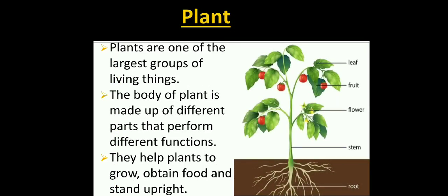Plant. Plants are one of the largest group of living things. The body of a plant is made up of different parts that perform different functions. They help plants to grow, obtain food and stand upright. Plants also have different parts performing different functions. Without plants, there would be no food to eat and no oxygen to breathe. Here is the picture of a plant. It consists of leaf, fruit, flower, stem and root.